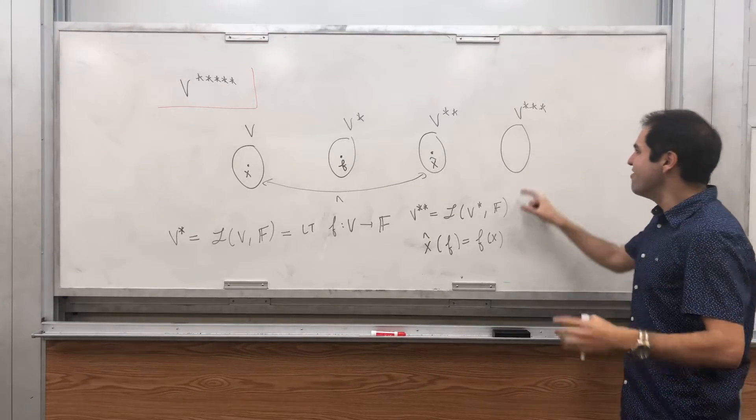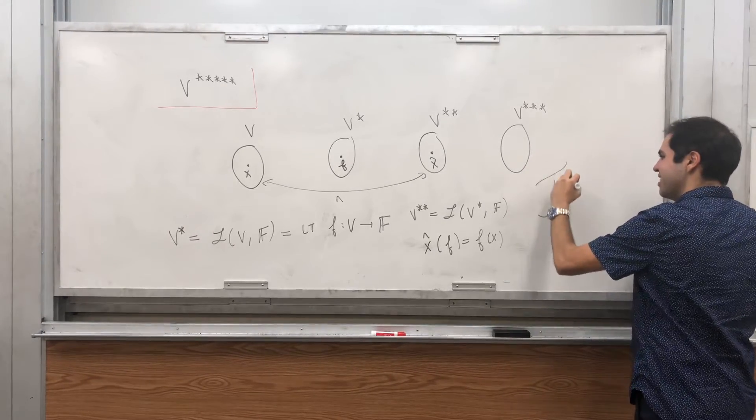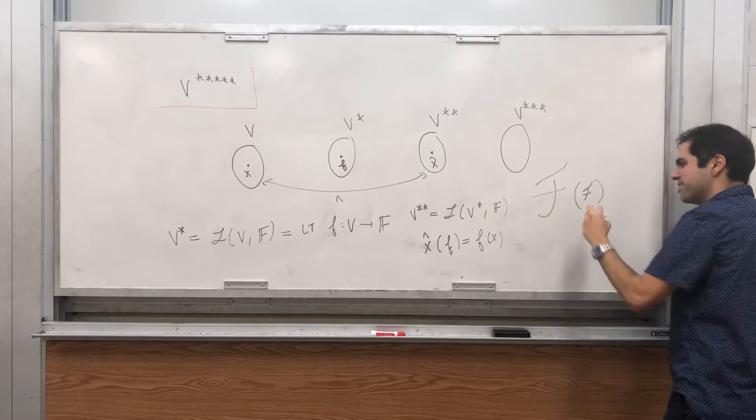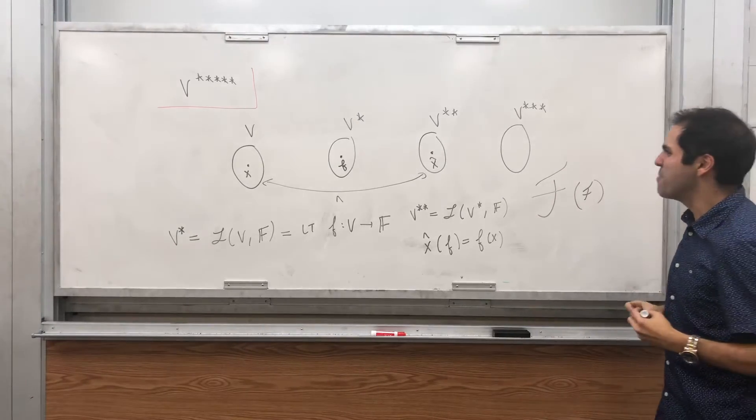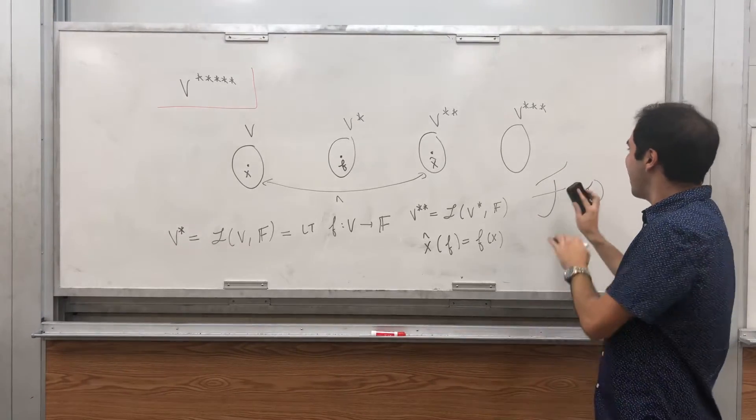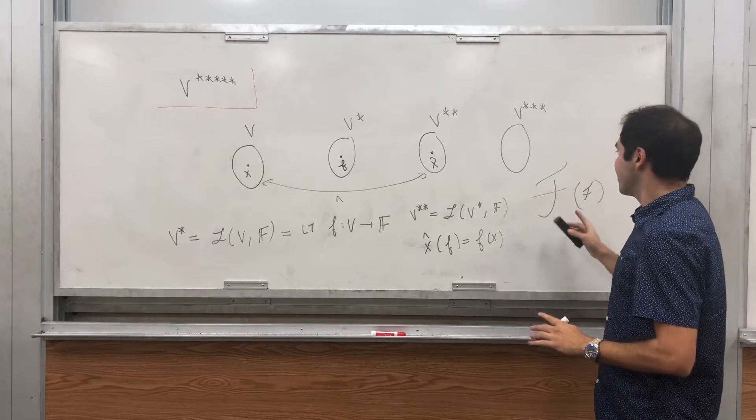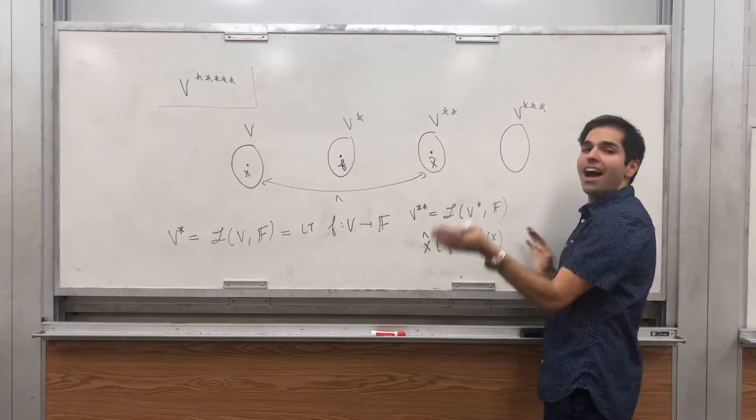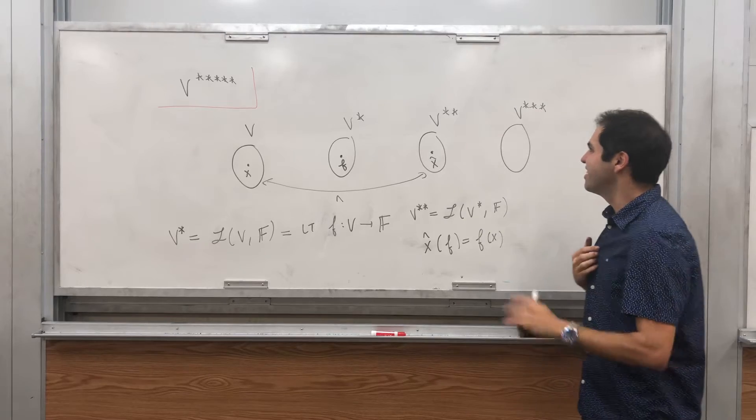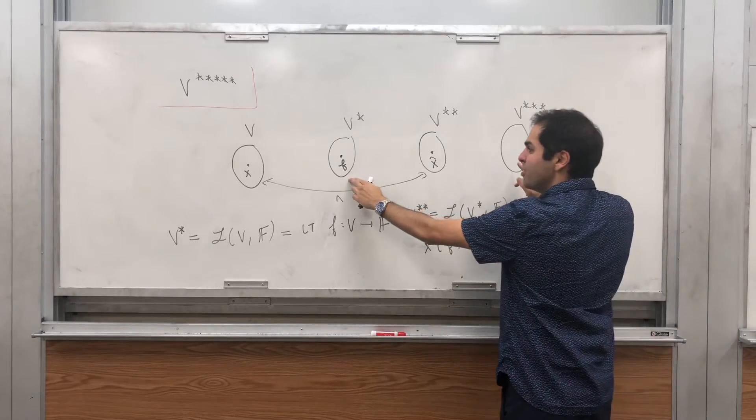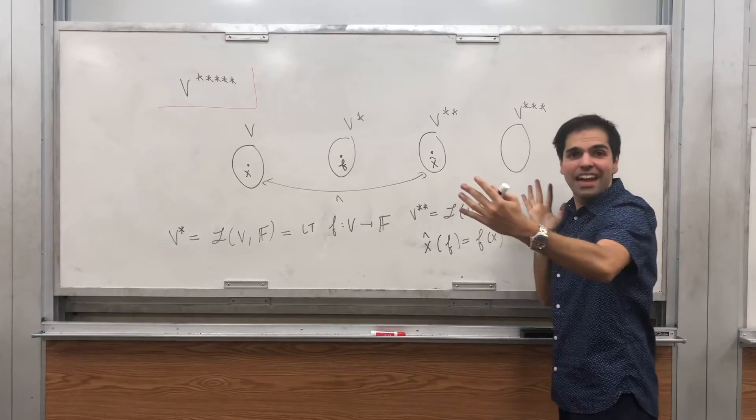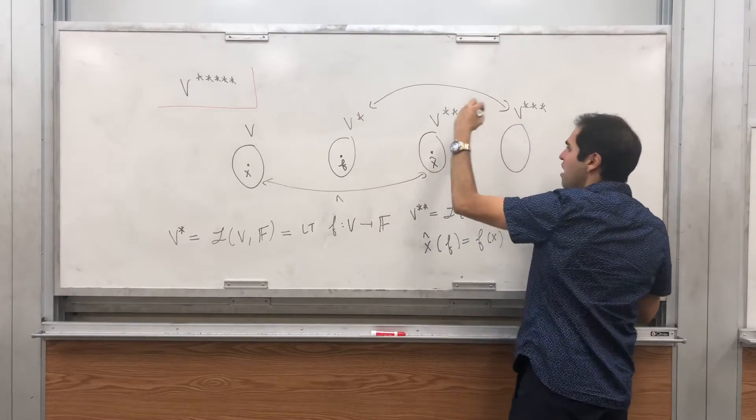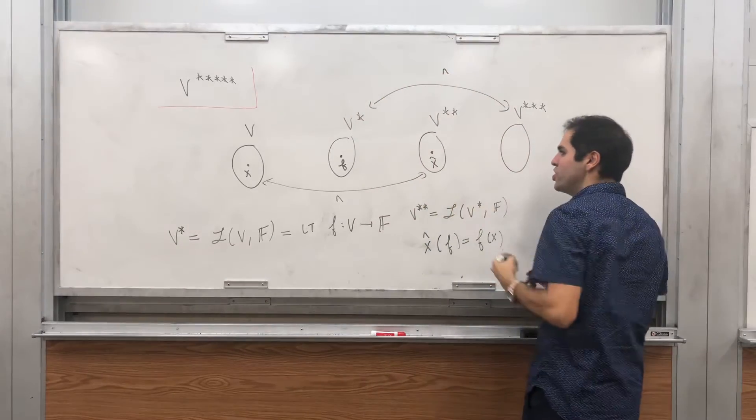Technically it would be like crazy functionals, like big F that takes little functionals here as its input and spits out a number. But it turns out again we don't really need this description. Whenever you add two stars, and that's the most important thing in this video, whenever you have to add two stars, you have a nice isomorphism, the hat isomorphism. In particular, given F, we can associate F hat.